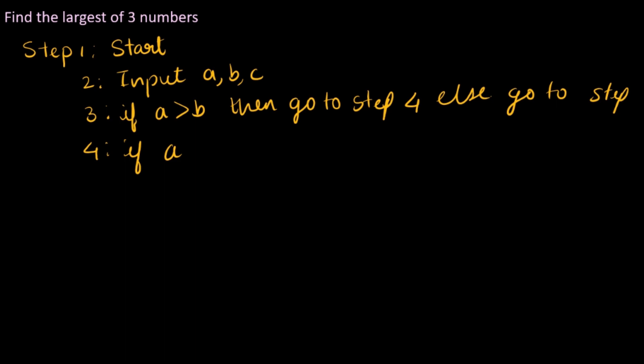Then we'll have to check if A is greater than C also. So what I mean is if A is 3, B is 2, C is 1, then A is greater than B, right? That is solved. Now we have to check if this is greater than this also.